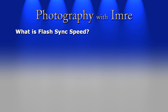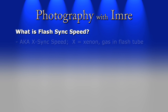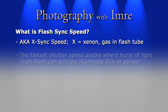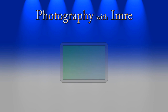A definition for flash sync speed, or X-sync speed — the X standing for xenon, which is the gas commonly found in flash tubes — is the fastest shutter speed you can use where the burst of light from the flash can entirely illuminate the film or sensor. To understand this a little better, let's use a visual example.